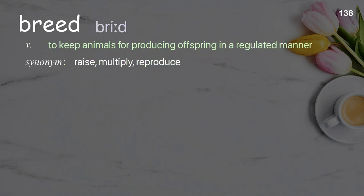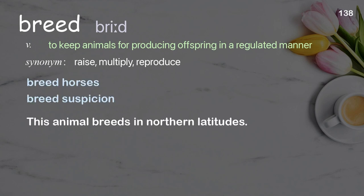Breed: to keep animals for producing offspring in a regulated manner. Examples: breed horses, breed suspicion. This animal breeds in northern latitudes.